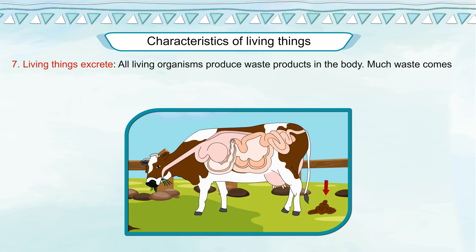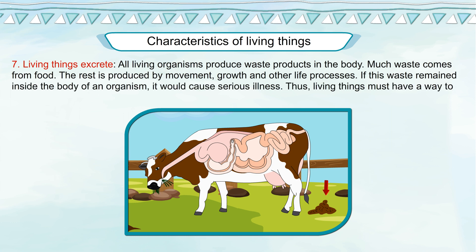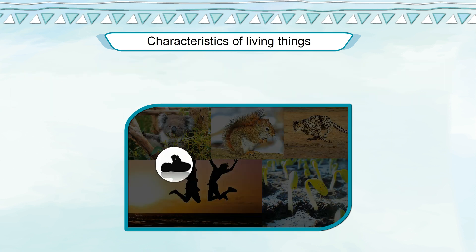Living Things Excrete: All living organisms produce waste products in the body. Much waste comes from food; the rest is produced by movement, growth and other life processes. If this waste remained inside the body of an organism, it would cause serious illness. Thus, living things must have a way to dispose of waste. Excretion is the process that removes waste products from the body of a living organism.